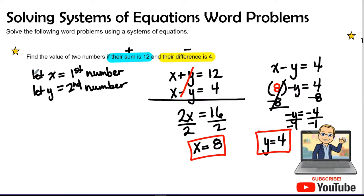So our first number will be eight. And our second number will be four. So eight plus four is 12. Eight minus four is four. And we got it. So please go ahead and take notes. And hopefully you understand these two examples of solving systems of equations and word problems. All right. Stay tuned for part two of this video series.